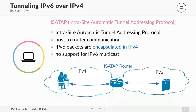The other option is ISATAP — Intra-Site Automatic Tunnel Addressing Protocol. It is host-to-router communication, like Teredo. IPv6 packets are encapsulated in IPv4; there is no multicast support. The IPv6 packets from the host are encapsulated in IPv4, sent to the ISATAP router, and then broken out to the IPv6-enabled internet.